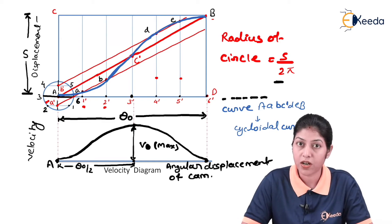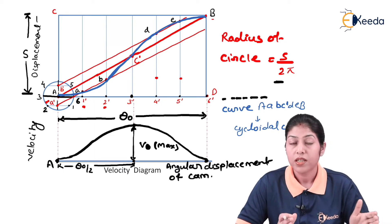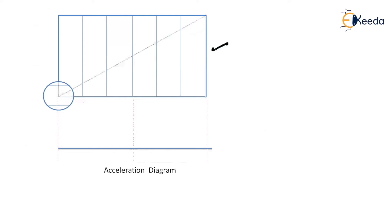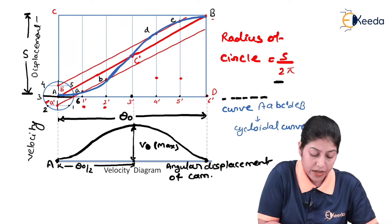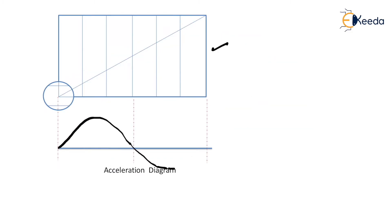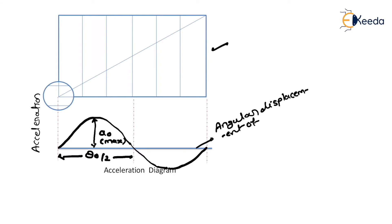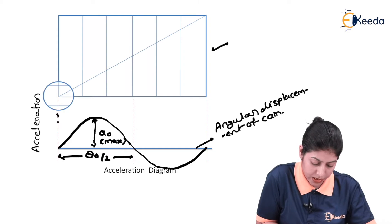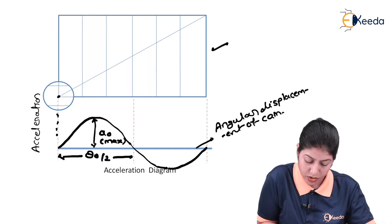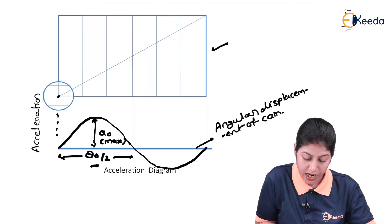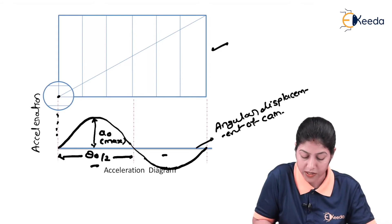The acceleration curve is divided into two parts for each stroke. For the outstroke, the first half of theta-naught represents acceleration and the second half represents deceleration or retardation. The curve in the downward direction represents retardation. Now we want to define displacement, velocity, and acceleration in terms of equations.